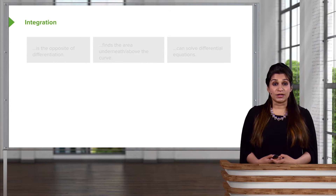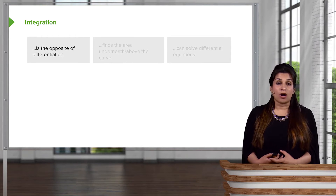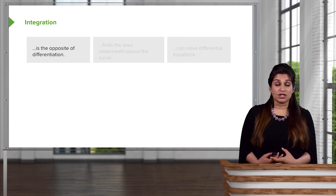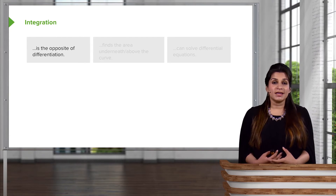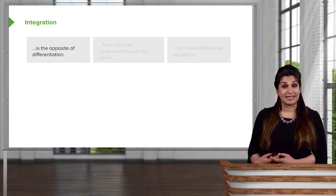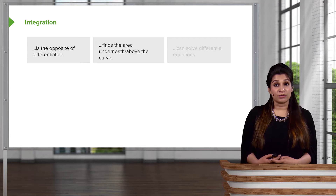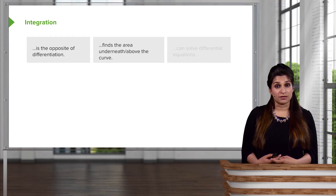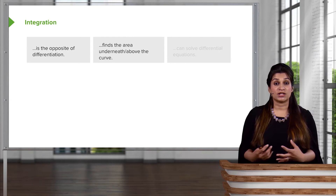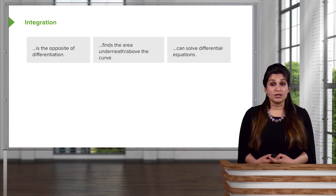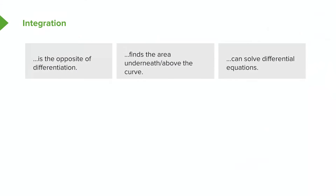A little bit about integration before we start: mathematically, it is the opposite of differentiation. With differentiation, we brought the power down and decreased it by one — we'll see how we can do the opposite to find integrals. Integration is going to find the area underneath or above curves. Integration can also be used to solve differential equations. Because it's the opposite of differentiation, once you've differentiated, you can go back to the original function by integrating. Differentiation isn't an irreversible process.